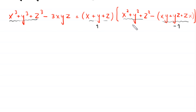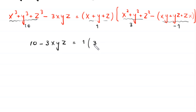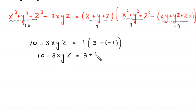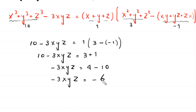Substituting, we get 10 - 3xyz = 1 × (3 - (-1)) = 1 × 4 = 4. So 10 - 3xyz = 4, which gives -3xyz = -6. Dividing both sides by -3, we get xyz = 2.